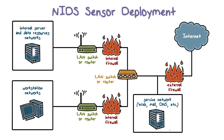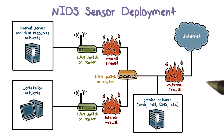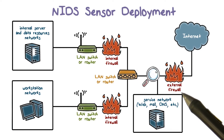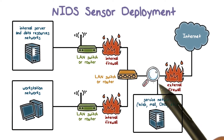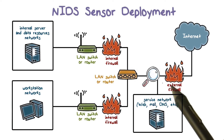The internal firewalls also monitor traffic between the subnets. So that's the deployment of firewalls. But what about IDS? A common location for an IDS sensor is just inside the external firewall.